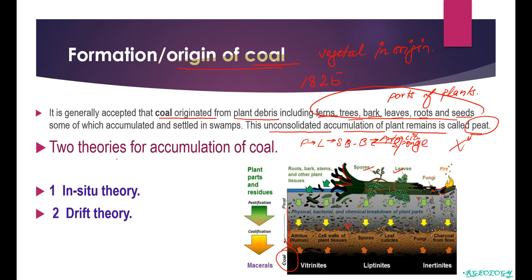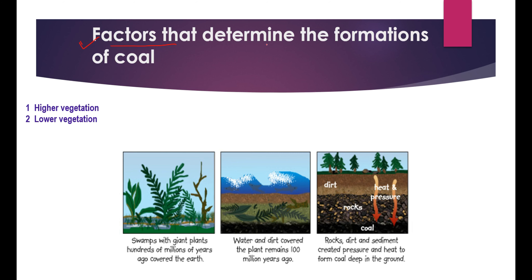There are two theories: first is the in-situ theory, and second is the drift theory. The factors that determine the formation of coal — the conditions or environment necessary for the transformation from peat to lignite to bituminous to anthracite — are important to understand. There is no doubt that coal is of vegetable origin and is derived from the vegetable parts of plants.